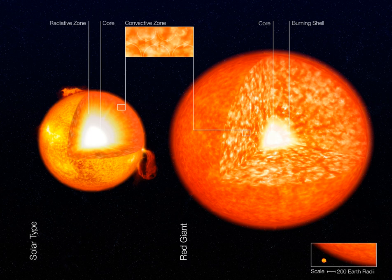In main sequence stars more than 1.3 times the mass of the Sun, the high core temperature causes nuclear fusion of hydrogen into helium to occur predominantly via the carbon-nitrogen-oxygen cycle instead of the less temperature-sensitive proton-proton chain. The high temperature gradient in the core region forms a convection zone that slowly mixes the hydrogen fuel with the helium product. The core convection zone of these stars is overlaid by a radiation zone that is in thermal equilibrium and undergoes little or no mixing.